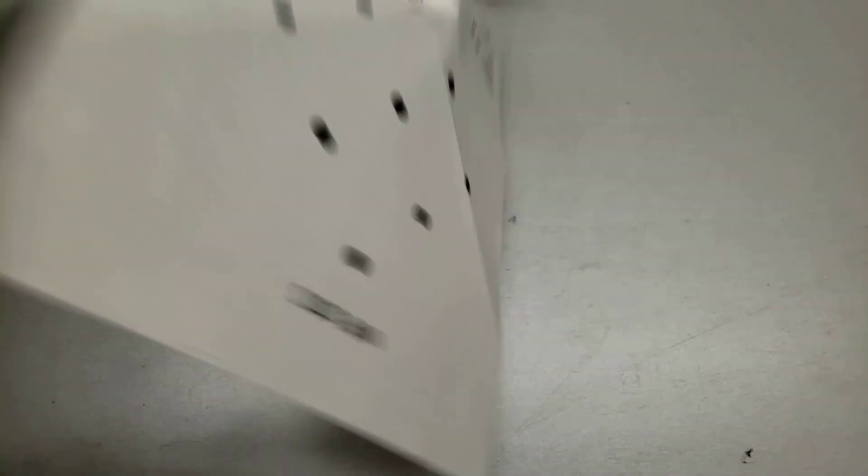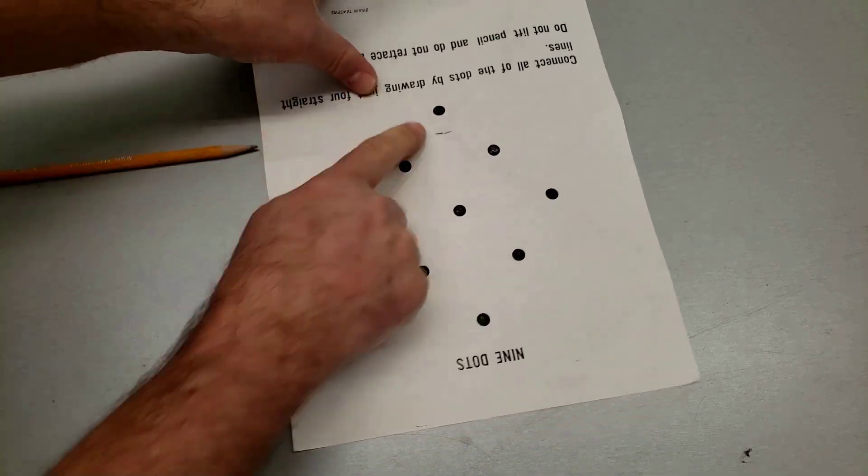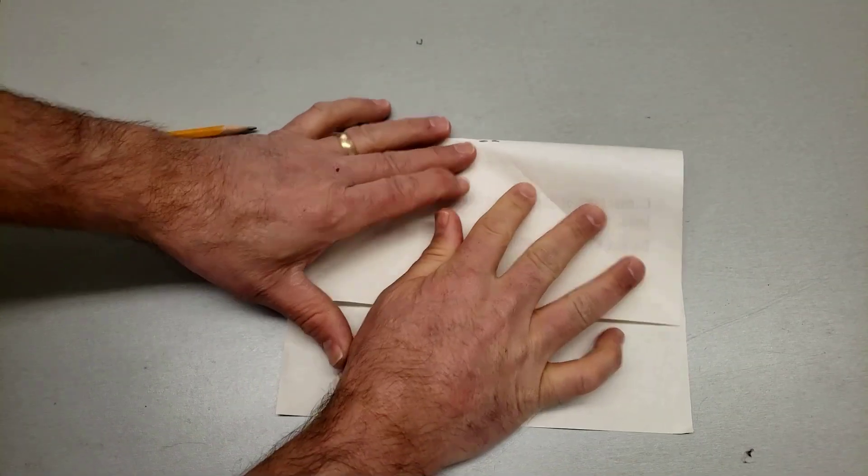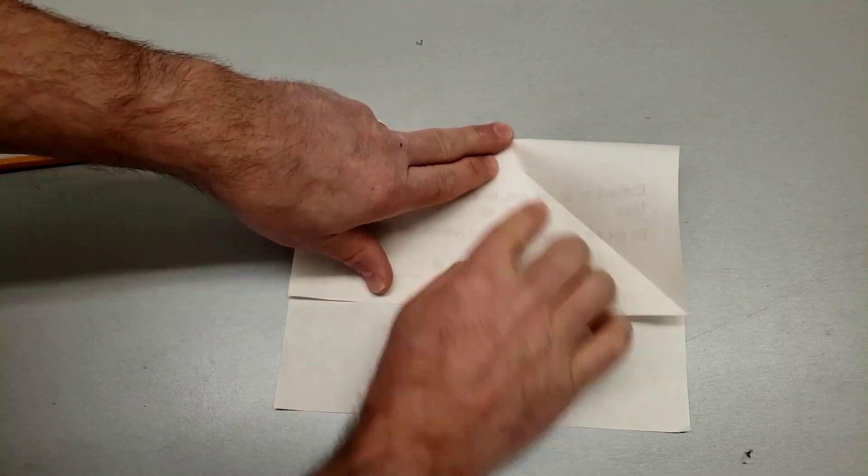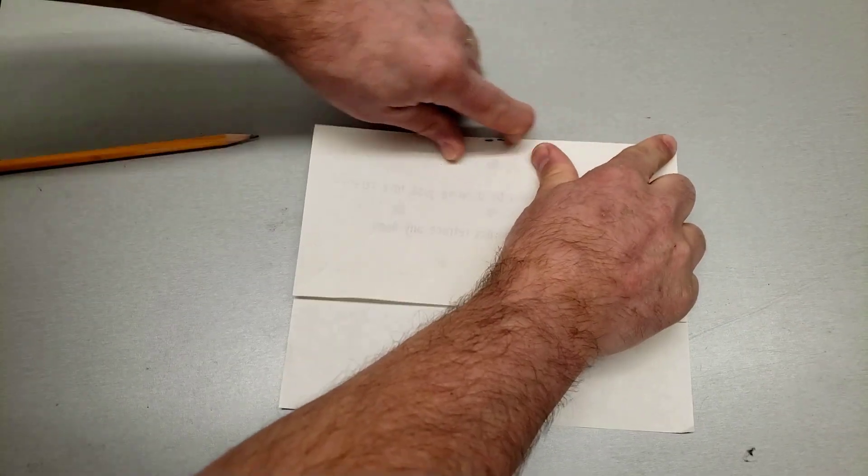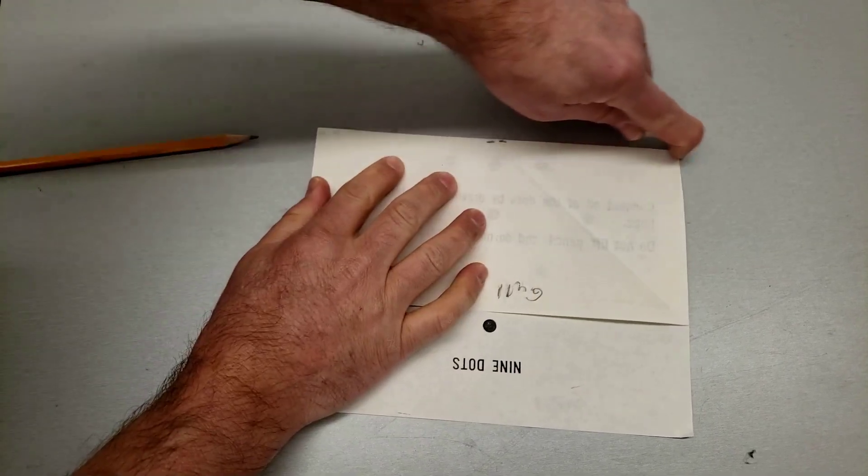And now when I flip it, this one gets folded in but I can see that mark real easily so it helps me keep it straight and get it in the exact right spot. Once again, the sharper you make those creases the better.